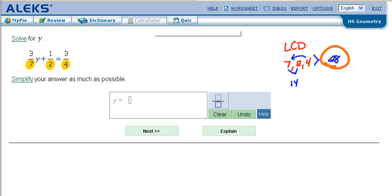So we're going to take this equation, 3 over 7y, plus 1 over 2, equals 3 fourths. And we're going to translate this all into whole numbers, by multiplying everything by 28, and changing it into whole numbers.